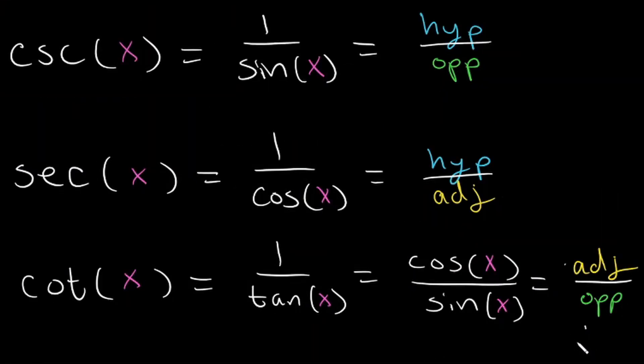So that is it — our final three trigonometric functions: cosecant, secant, and cotangent.